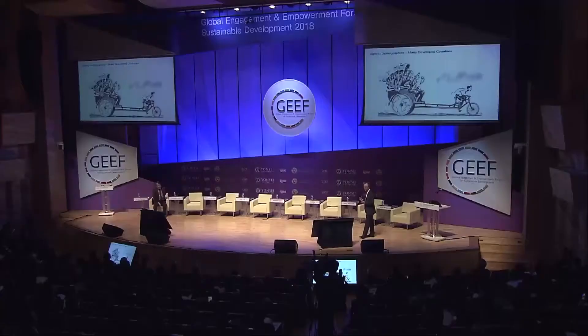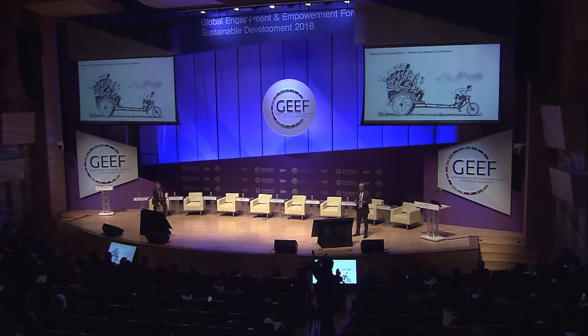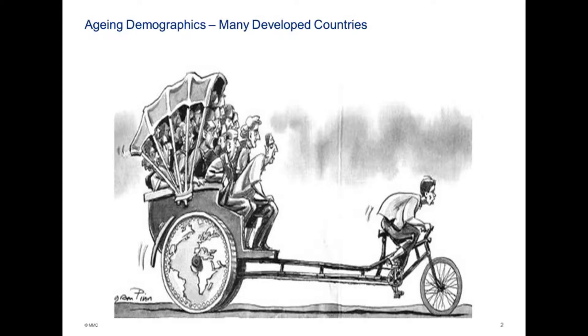When we look at demographics, this is just a cartoon to demonstrate the predicament that most developed countries face today, particularly in terms of government budget deficits. What that means is that as the society ages, naturally the younger generation, being smaller, will be providing less tax revenues to the government system, whereas the burden of the elderly for social security and medical costs will naturally have to increase.